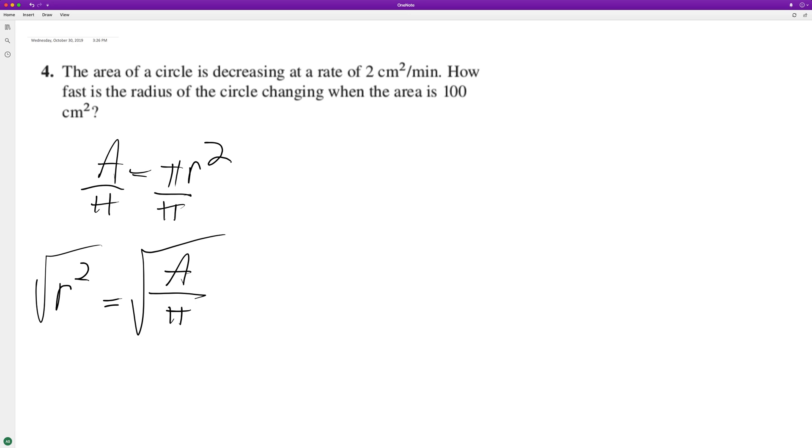Take the square root of both sides, and I'm going to rewrite this as r equals area divided by pi, which is a constant - pi is a constant even though it's an irrational number - raised to the one-half.